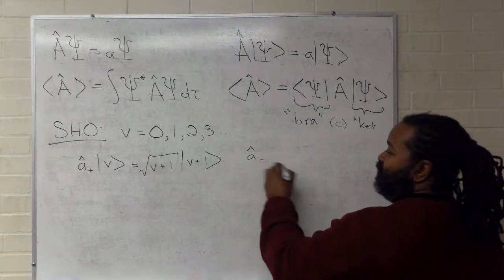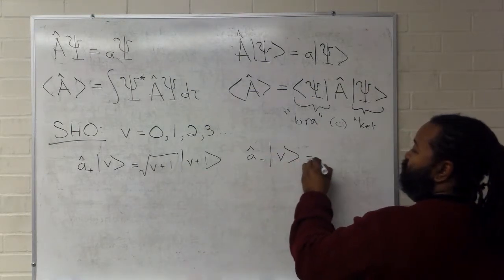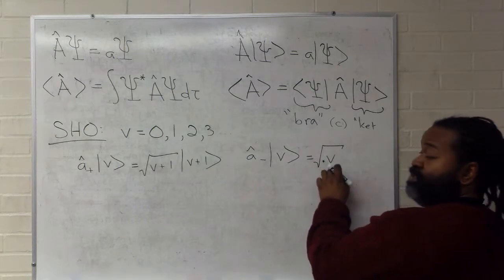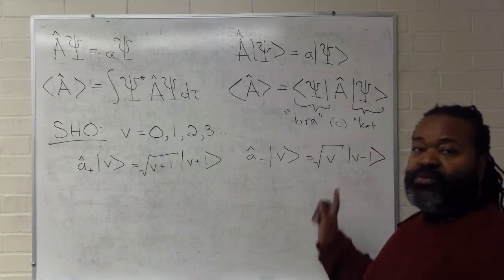We can then define the lowering operator acting on a value, giving us the value itself under a square root, and then reducing it by one.